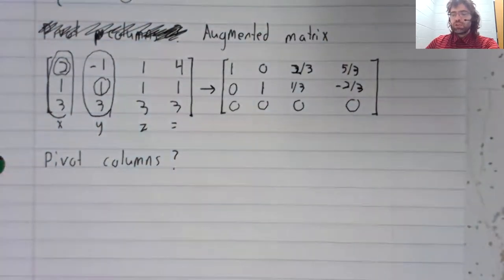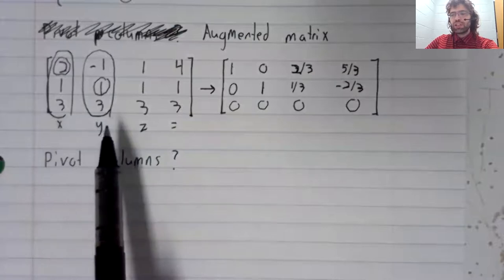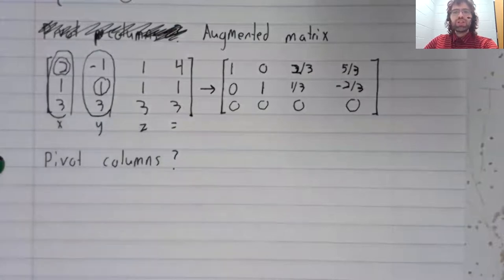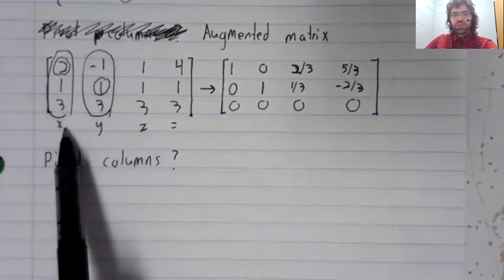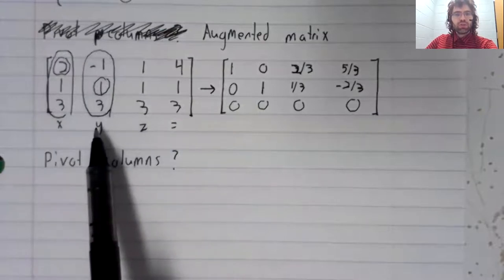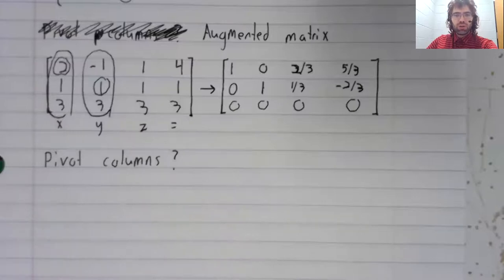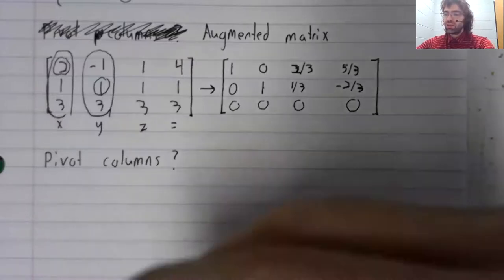And what you notice is that you have three variables corresponding to columns. X corresponds to a pivot column, Y corresponds to a pivot column, and Z does not correspond to a pivot column.